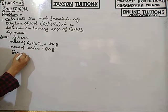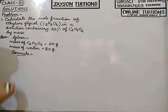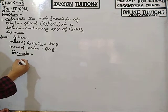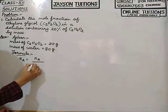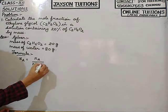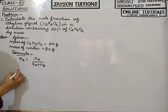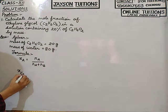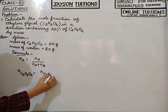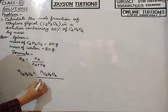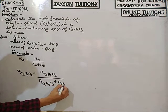Now I have to write the formula. They are asking to find the mole fraction. The mole fraction formula, which we studied in the previous video: mole fraction of A equals number of moles of A divided by total number of moles. So mole fraction of ethylene glycol C₂H₆O₂ equals moles of ethylene glycol divided by total moles — that is, moles of ethylene glycol plus moles of water.